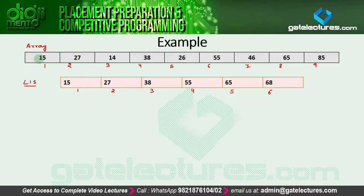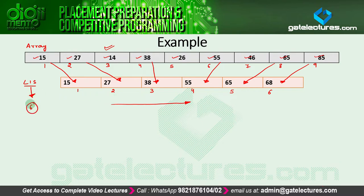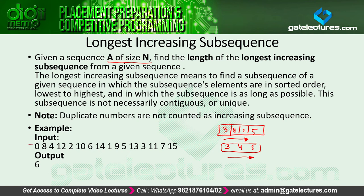In the same way, consider this example: we have an array with the values 15, 27, 14, 38, 26, 55, 46, 65, and 85. If you take the values 15, 27, 38, 55, 65, and 68, you can see all these values are in increasing order. This sequence is present inside the original array, and since all values are in increasing order, this is the Longest Increasing Subsequence. The total number of elements here is 6, so the length is 6.